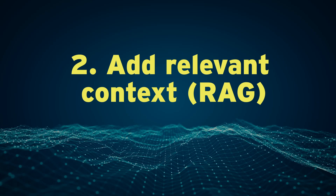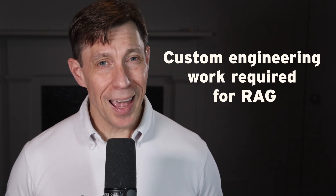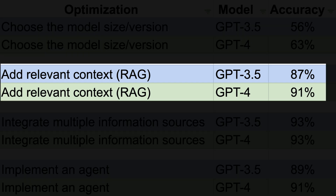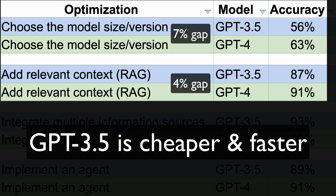Second, add relevant context or RAG. We then supplemented our solution with relevant sections from the Formula One regulations. This effort required parsing the documents to maintain hierarchy and converting the text to embeddings. RAG created big performance improvements: 87% for GPT-3.5 and 91% for GPT-4. Surprisingly, the gap between the two models is now smaller — a significant finding because GPT-3.5 is both faster and cheaper.